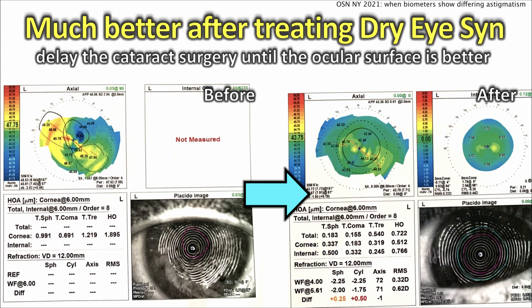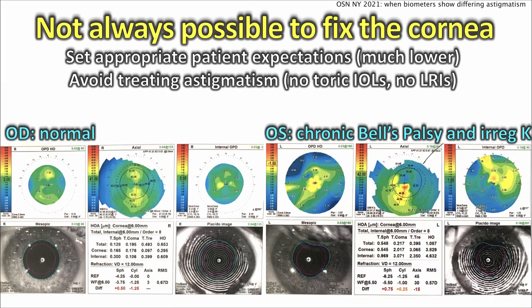Now much better — that same eye, look, after treating the dry eye syndrome it looks a whole lot better. Now you can actually make out where the astigmatism is. The reflection of the rings looks much nicer, and at this point we can actually probably proceed with the cataract surgery. This patient is now ready for surgery.